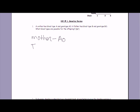And then father, I'm going to write down father. And B blood type with genotype BO. What blood types are possible for the offspring? Alright, so then we're going to make a Punnett square.